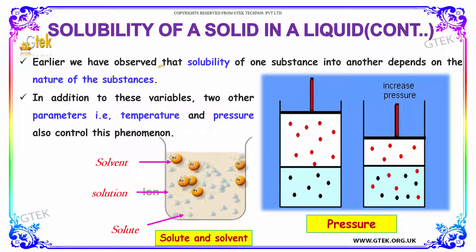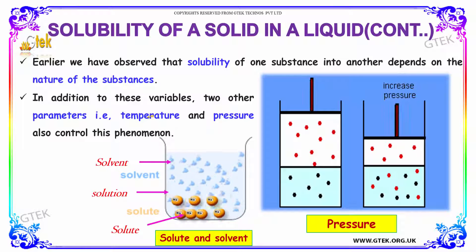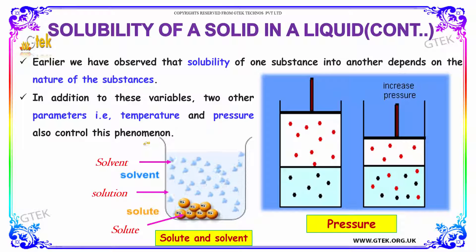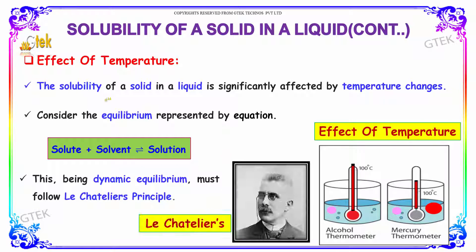We have observed that the solubility of one substance into another depends on the nature of the substances. In addition to this variable, two other parameters — temperature and pressure — also control this phenomenon. The solubility of a solid in a liquid is significantly affected by temperature changes. Consider the equilibrium represented by the equation: solute plus solvent gives solution. Being a dynamic equilibrium, it must follow Le Chatelier's principle.